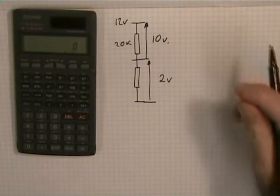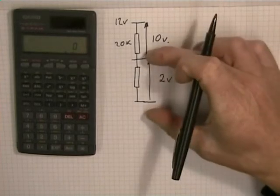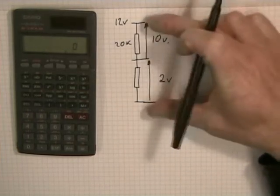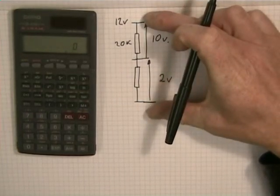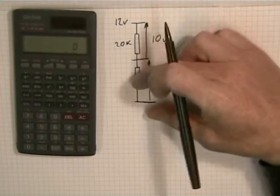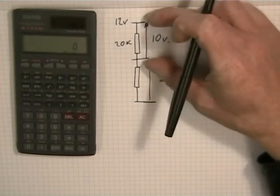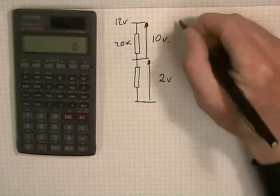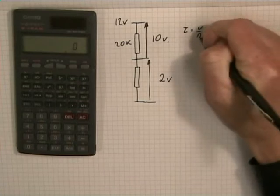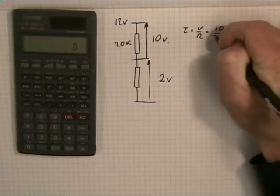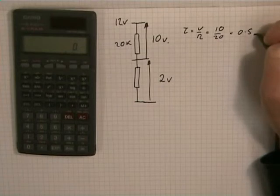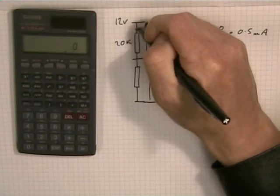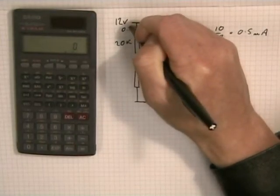Now, using Ohm's law, we know only one thing there, the 2 volts, so that's no use to us. We know between there and there, we know the total voltage is 12, but we don't know the total resistance. Between these two points, we know the voltage and we know the resistance, so up here we can work out the current. So I equals V over R, equals 10 over 20, so that's 0.5 milliamps. So we can add that on the diagram, it's 0.5 milliamps.